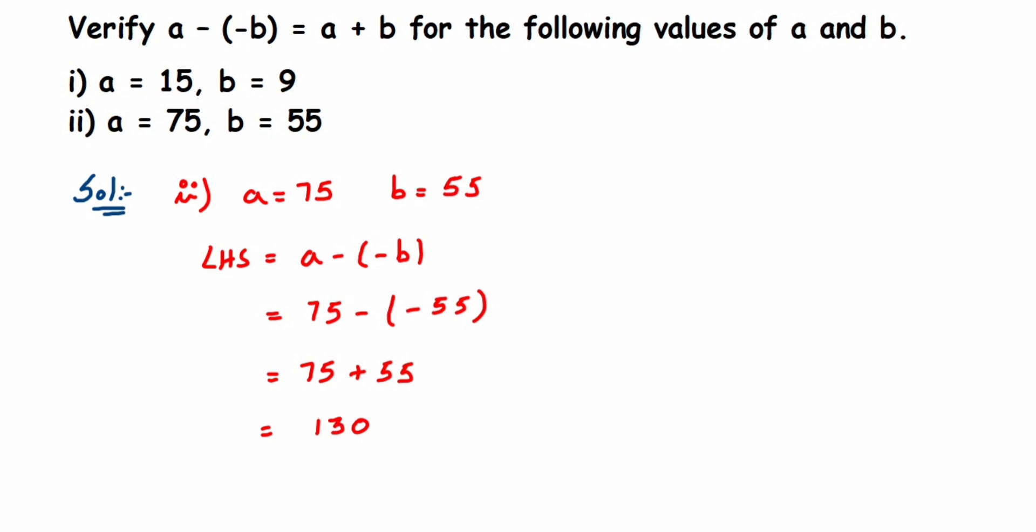Then the RHS part. RHS equals a plus b. A value is 75 and b value is 55. When we add up, we'll get 130. You can see that LHS and RHS are equal, so LHS equals RHS.